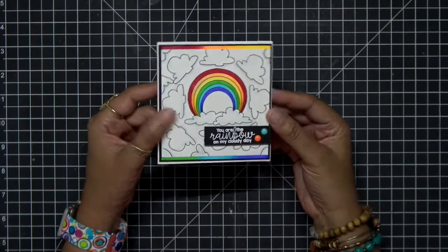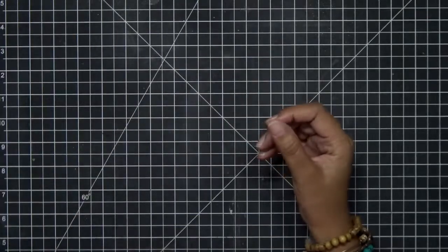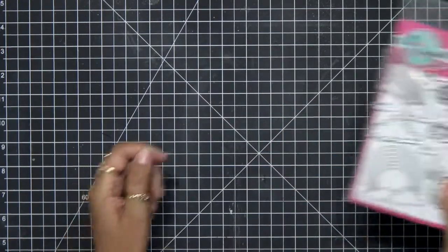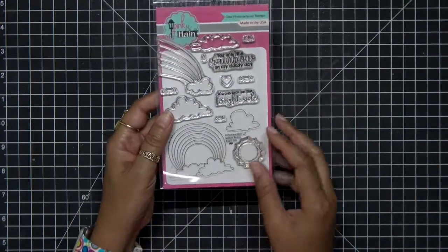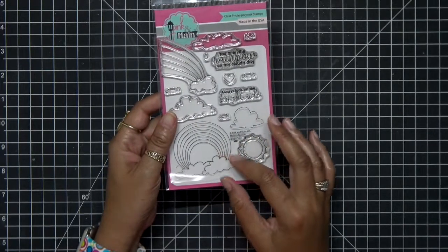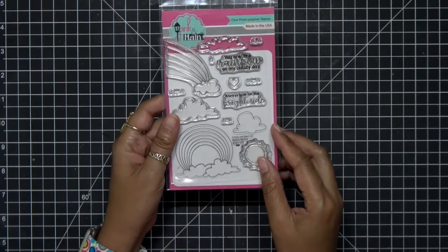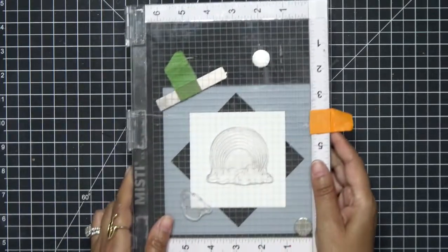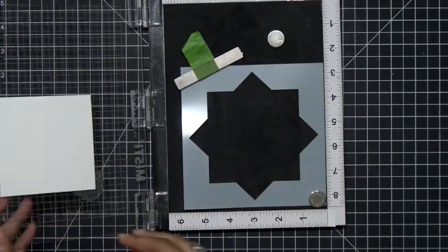So let's go ahead and get started. I'm using the Pink and Main Bright Side stamp set. I absolutely love this stamp set. There are some cards up on my blog featuring this stamp set. Today we'll have another one. I have all the supplies and everything and the colors I use over on my blog.